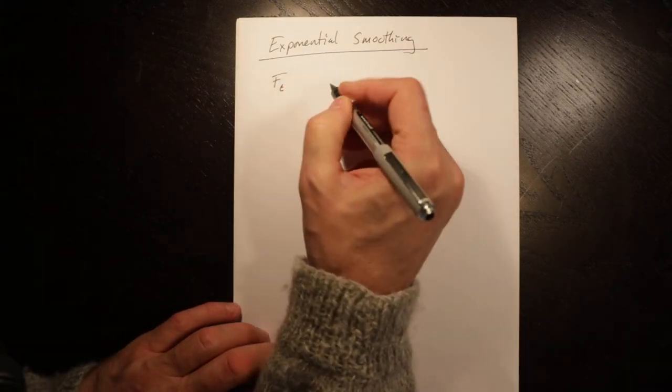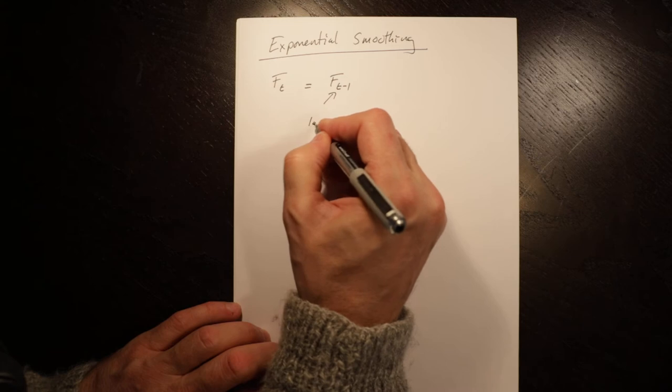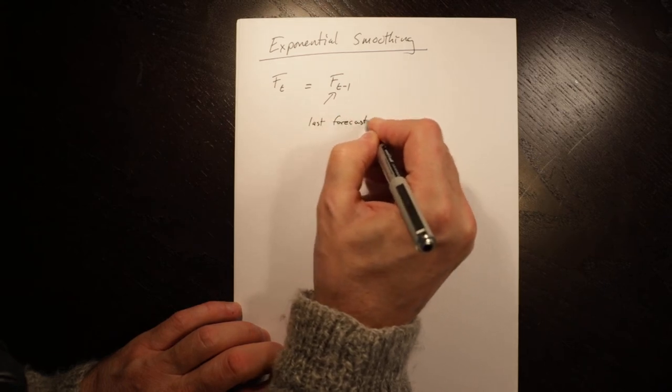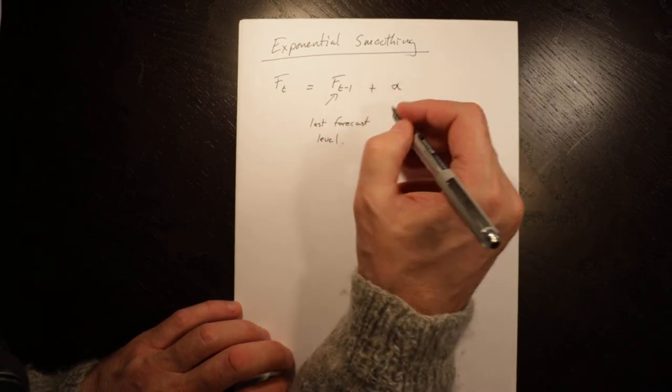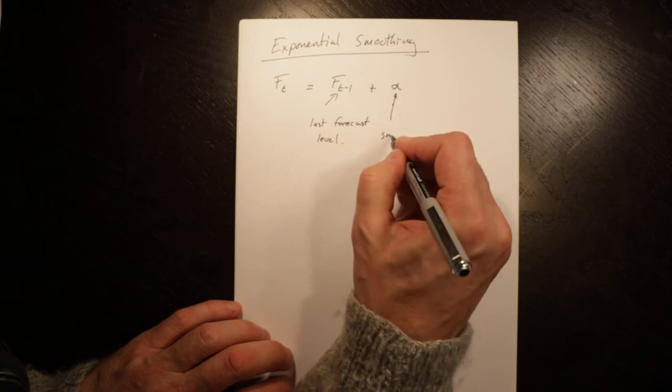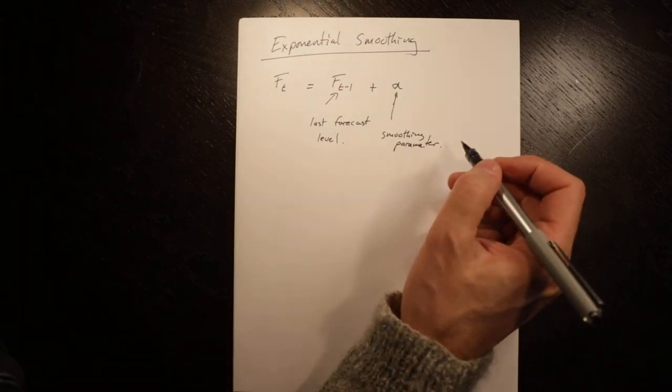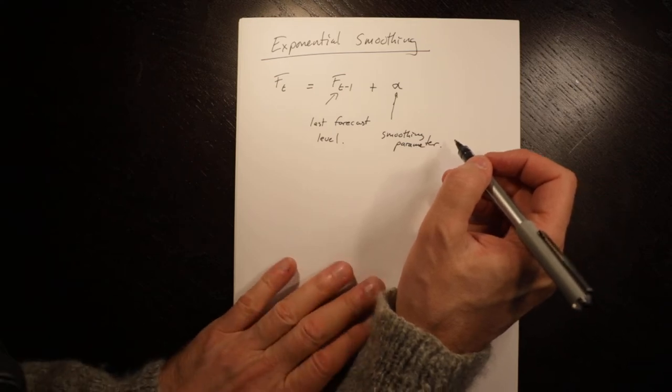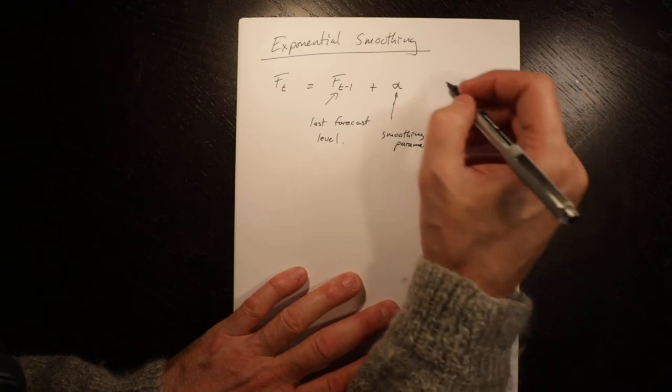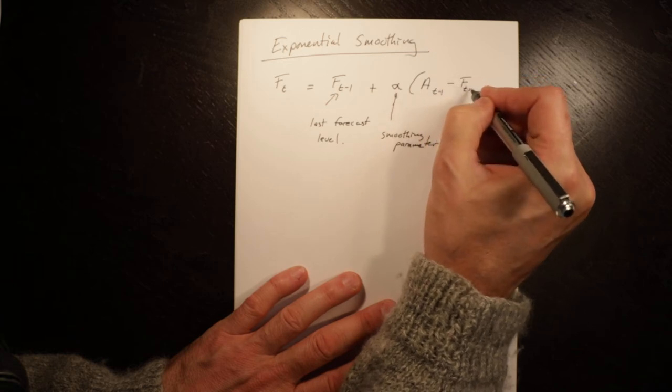Simply, the notation is: the forecast in time t is equal to the forecast in time t minus 1, the last forecast, also often called the level, plus alpha, which is what's called a smoothing parameter. If you remember when I talked about moving averages, the longer the moving average is, the smoother your forecast is. So the smoothing parameter times actual t minus 1 minus forecast t minus 1.